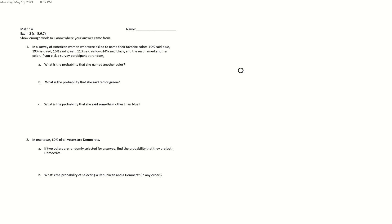Number one, a survey of American women asked outstanding favorite color. We got 19 said blue, red, and so on. The rest named another color. So we got 19 plus 19 plus 16 plus 11 plus 14. If I add those up, I get 79 percent. So if this was 79, then the rest named another color. So the other color had to be 21 percent, or it should be 100 minus 79.